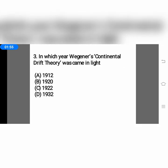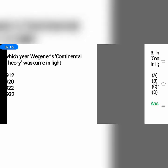The next question: in which year did Wegener's continental drift theory come to light? Option A, 1912; option B, 1920; option C, 1922; or option D, 1932. The continental drift theory came to light in 1922, so the correct option is option C.